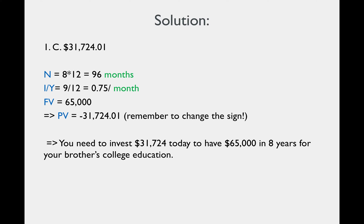First, list out the components that we are given from the problem. Next, translate the period and interest into the period that the interest is compounded, which is monthly. Use a financial calculator to enter the information. Then we get the result: you need to invest $31,724 today to have $65,000 in 8 years for your brother's college education.